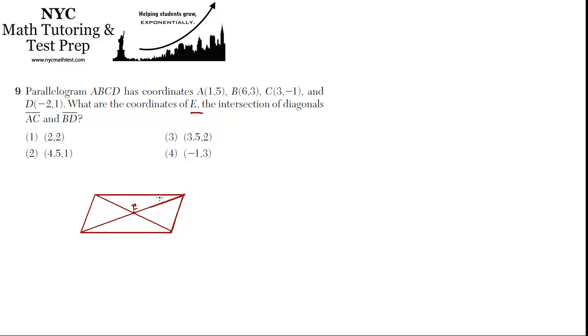So that's what we're being asked to find for this parallelogram, is the coordinates of the intersection of the diagonals, which is point E. So, all you have to do is find the midpoint of two points that are diagonally opposite from each other.